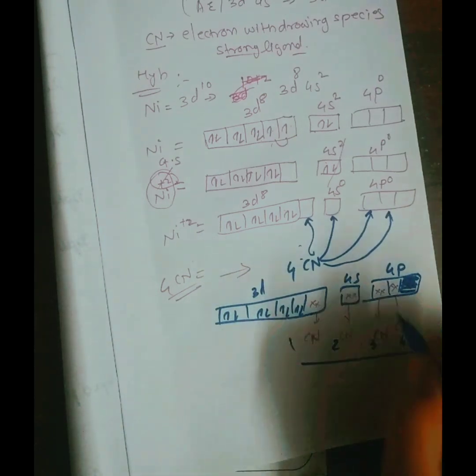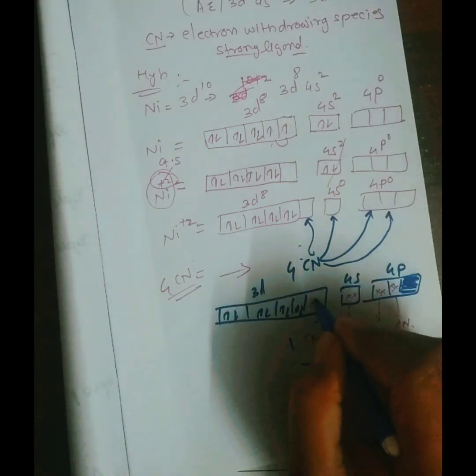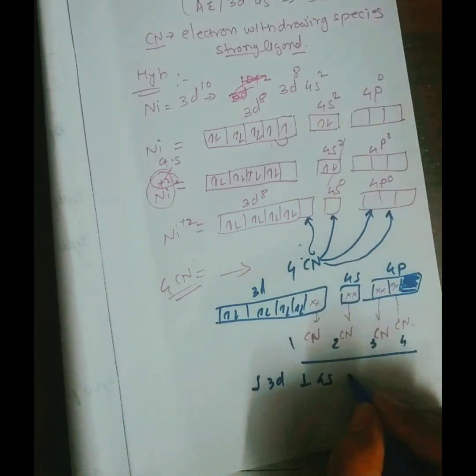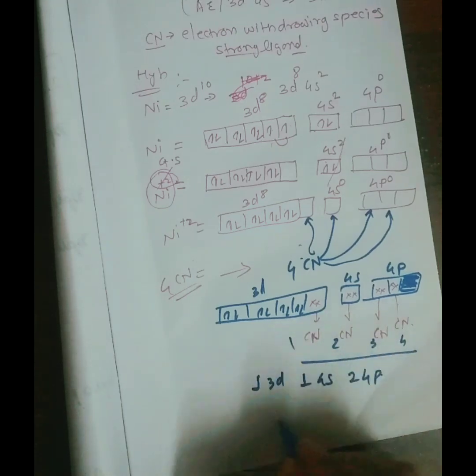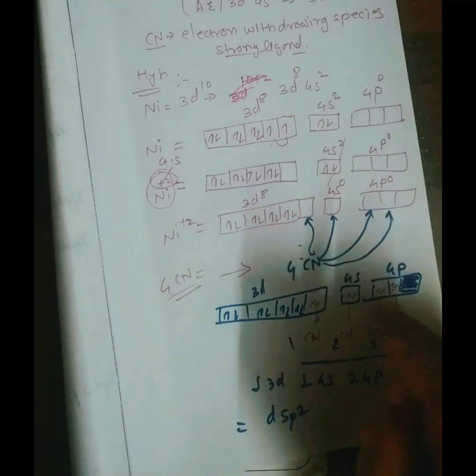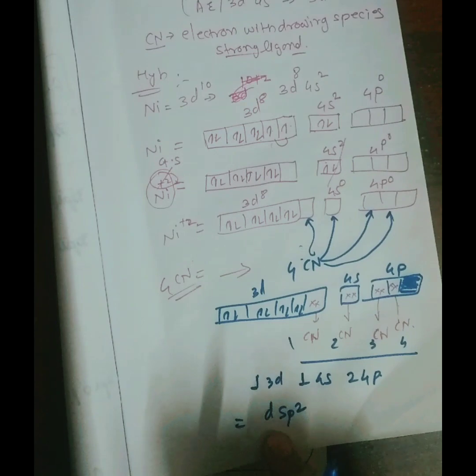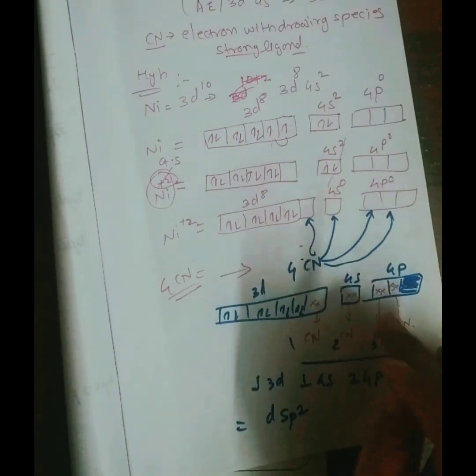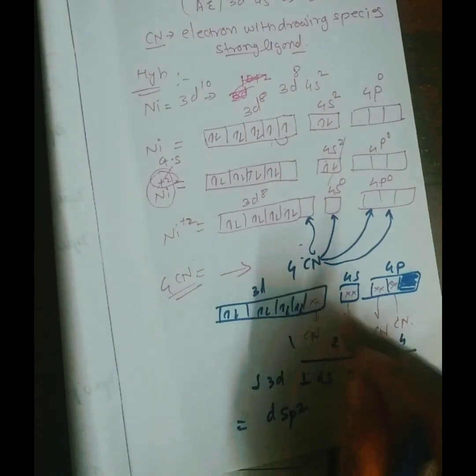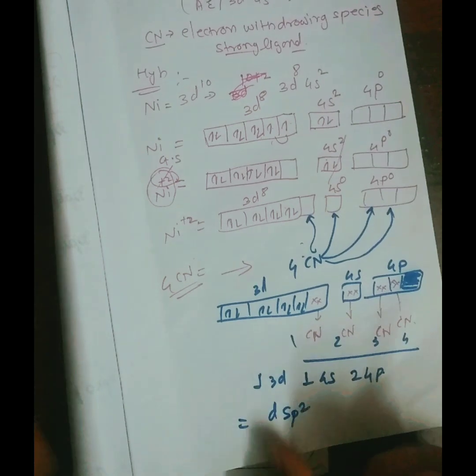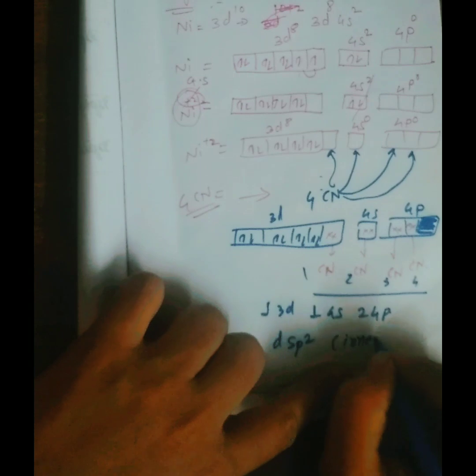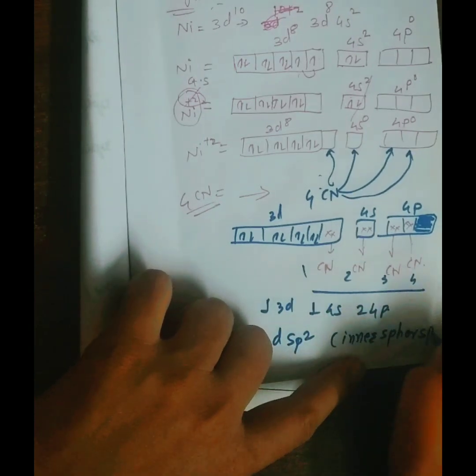That is 4 cyanide are occupied in one 3d orbital, one 4s orbital and two 4p orbitals. So the hybridization will become sp² hybridization. Two orbitals of p are occupied by cyanide ligand, as well as one 4s orbital is occupied by cyanide, and one d orbital is occupied by four cyanide. So this will be dsp² hybridization.